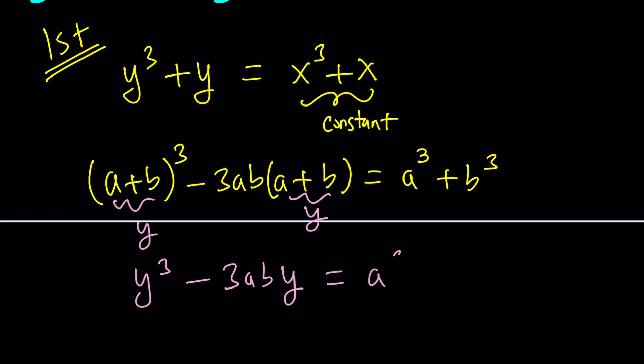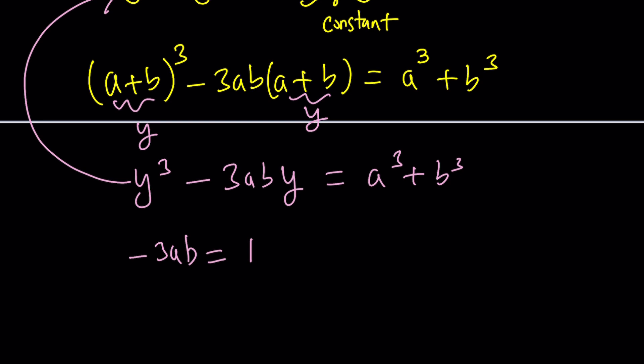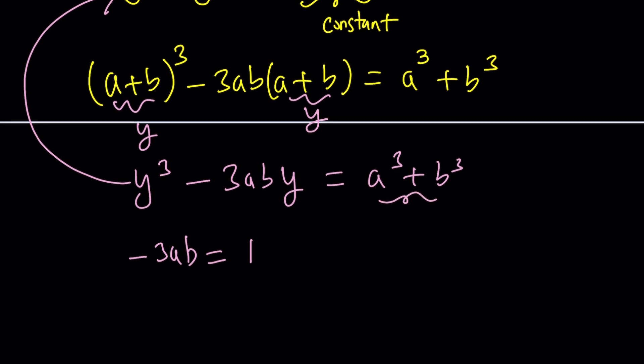I'm going to go ahead and set a plus b equal to y. So let's set it equal to y. And that'll give us the following equation: y cubed minus 3aby equals a cubed plus b cubed. And if you compare this equation to that one, you can come up with the following. Negative 3ab, which is the coefficient of y, is 1. And the constant term, which is a cubed plus b cubed, is equal to x cubed plus x. That's our constant term.